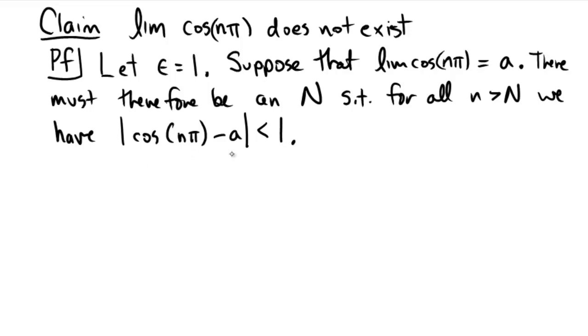Okay, now as we noticed from the previous slide, cosine of n pi oscillates between 1 and negative 1, depending upon whether n were odd or n were even. So if we fix the capital N, there's of course even and odd numbers beyond that capital N.